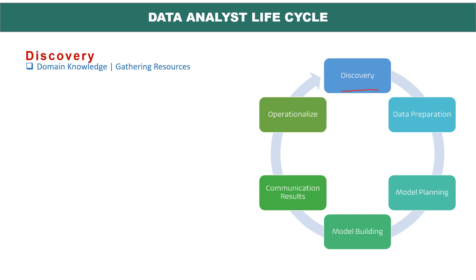If you are in FMCG, for example fast-moving consumer goods, you should know what kind of KPIs are to be tracked, what kind of data can flow from different sources, and how to understand that. Second is gathering resources — what resources you require, maybe in terms of data conditioning or data capturing. All the resources that are required, you should address in this step.